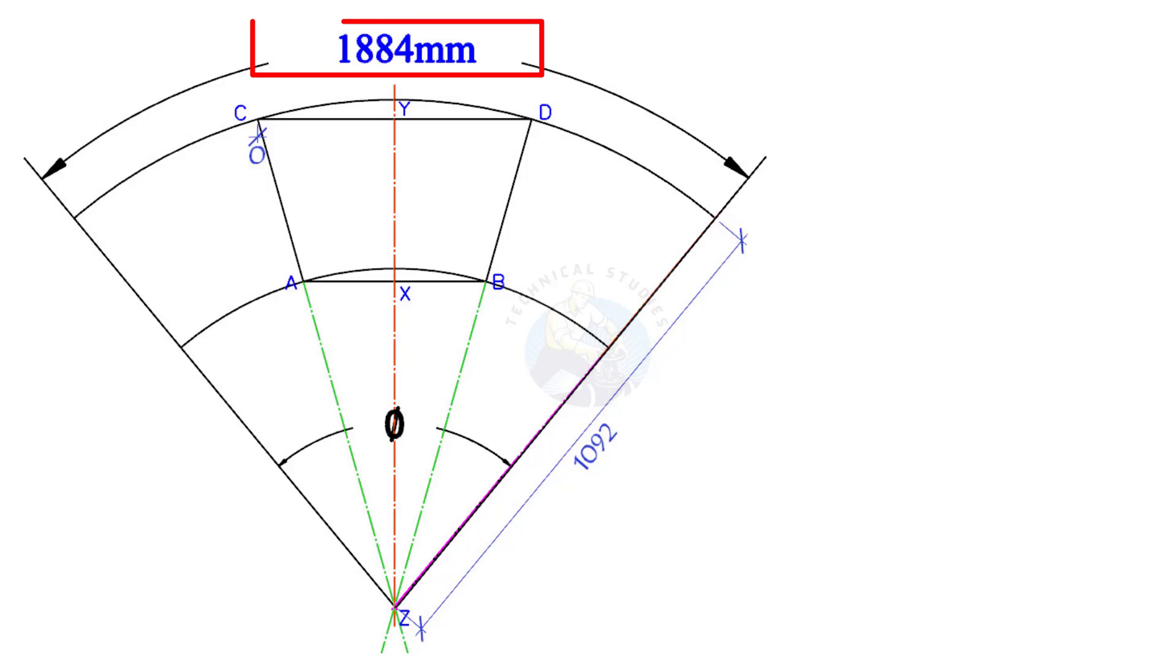We know the arc length, or the circumference of the cone is 1884mm, and the radius of the cone is 1092mm. Let us calculate the including angle of the cone layout.